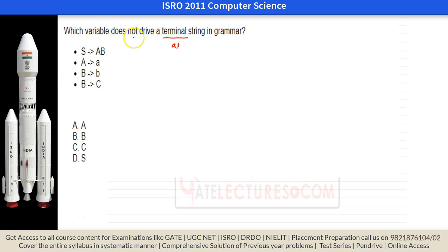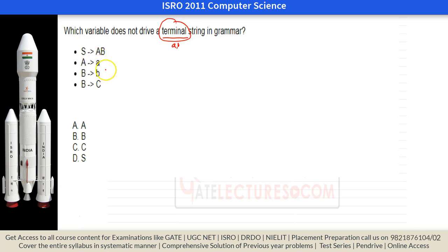The question asks which variable does not drive a terminal string in grammar. In a grammar, we have two types of strings: terminal and non-terminal. Capital letters are non-terminals or variables, and small letters are known as terminals. We will look at each symbol one by one.